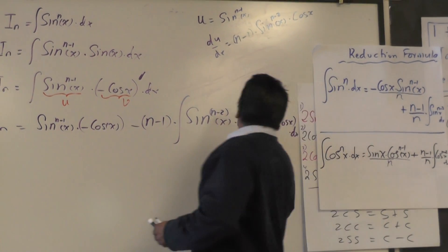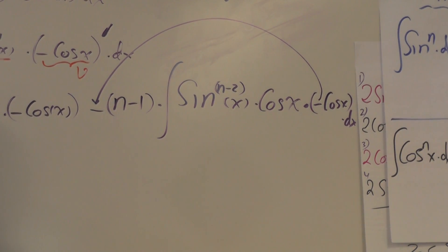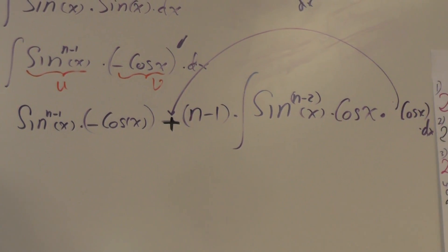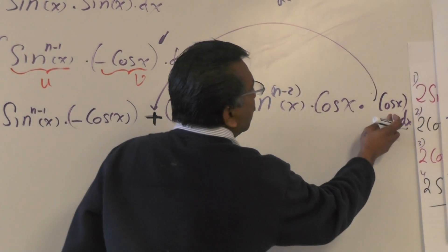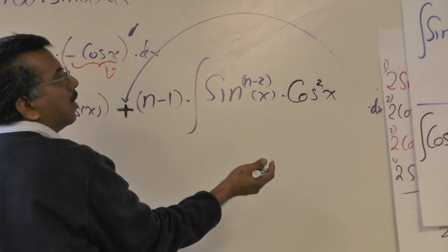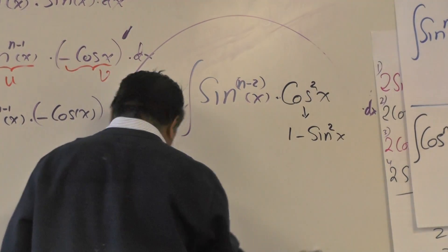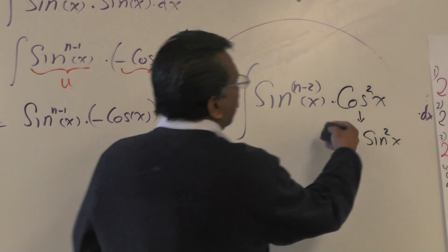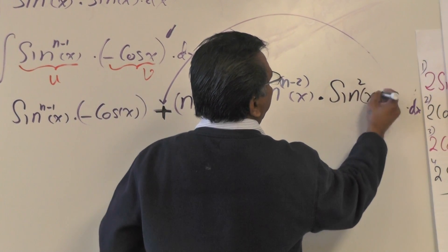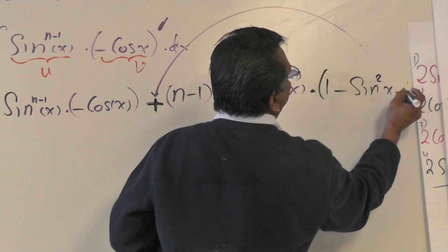The two minus signs — one from the subtraction and one from −cosx — turn to a plus. To avoid extra steps, I'll combine them. Cosine times cosine gives cos²x. Now I can replace cos²x using the identity: cos²x = 1 − sin²x. So the integral becomes (n−1) times integral of sinⁿ⁻²x times (1 − sin²x) dx.